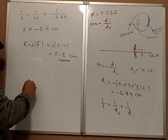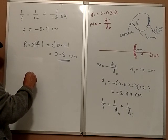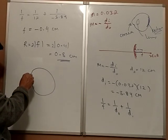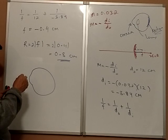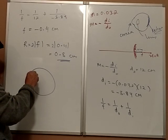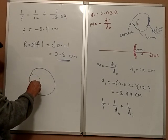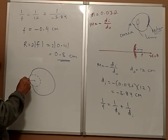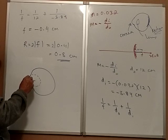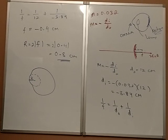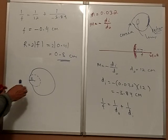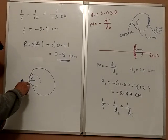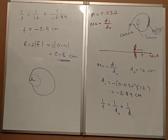So the radius of curvature of your cornea is 0.8 cm. That means if you made a perfect sphere out of your cornea, the radius of that sphere would be 0.8 cm. This problem has nothing to do with the lens inside your eye — it only involves the cornea on the outside.